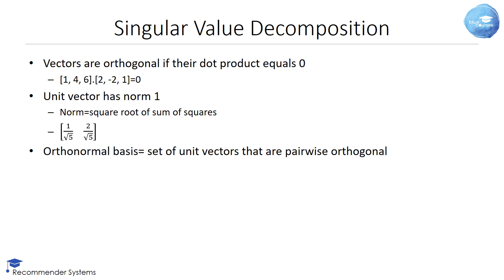A unit vector is a vector with norm 1. Remember, the norm, sometimes also called the Frobenius norm, is the square root of the sum of the squares. In our example, this becomes 1 divided by 5 plus 4 divided by 5 or 1. Finally, an orthonormal basis is a set of unit vectors that are pairwise orthogonal.